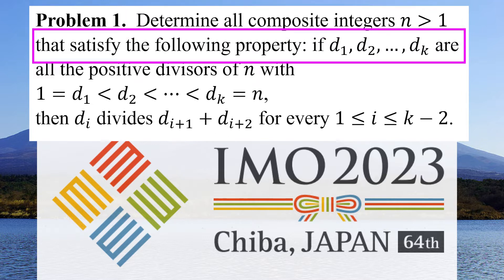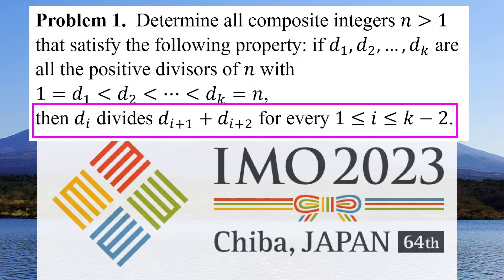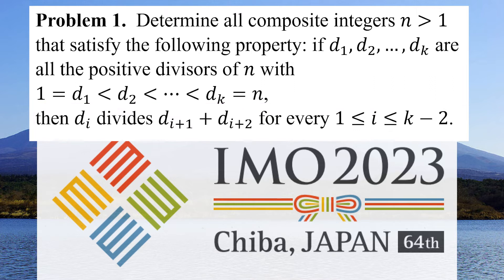If d₁, d₂, ..., dₖ are all the positive divisors of n, with 1 = d₁ < d₂ < ... < dₖ = n, then dᵢ divides dᵢ₊₁ + dᵢ₊₂ for every i between 1 and k-2.